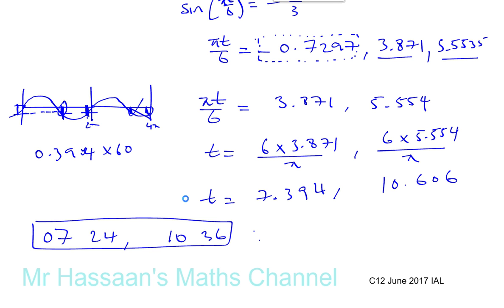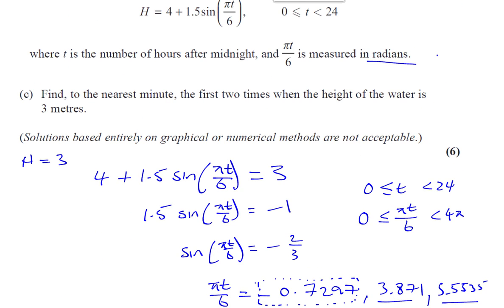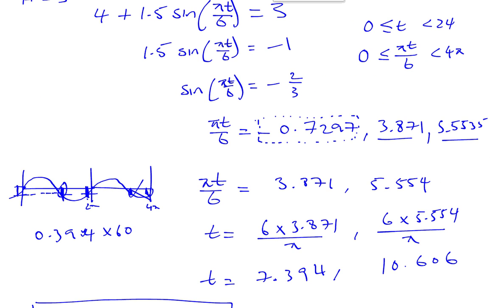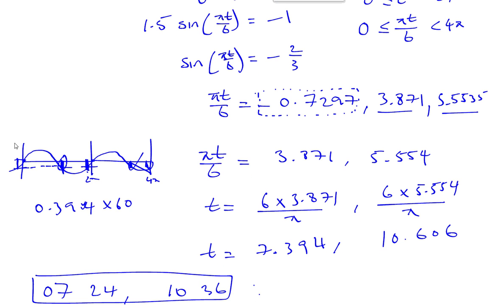Those are the two times when the height, the first two times when the height of the water is 3 meters. I hope that was understandable. Remember, the sine curve: shift sine of the angle gives you the first solution. Even if it's outside of the range, you use that to find the other solutions. You do 180 minus that to give you the other main solution. And then from these two you can generate all the other solutions needed.